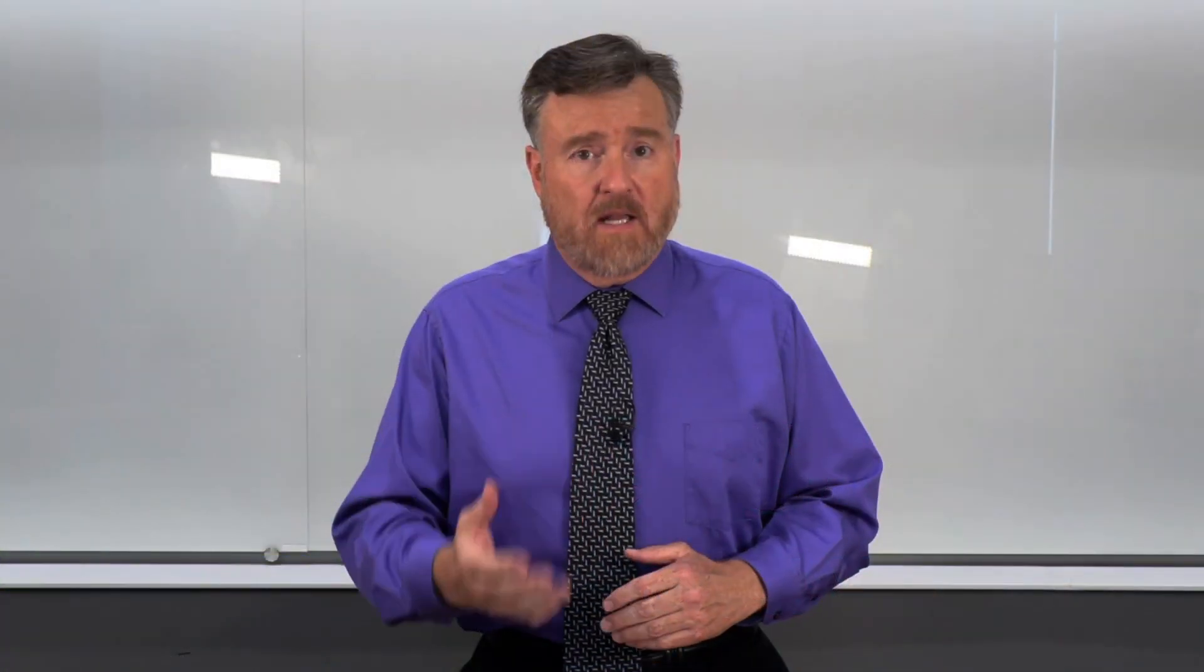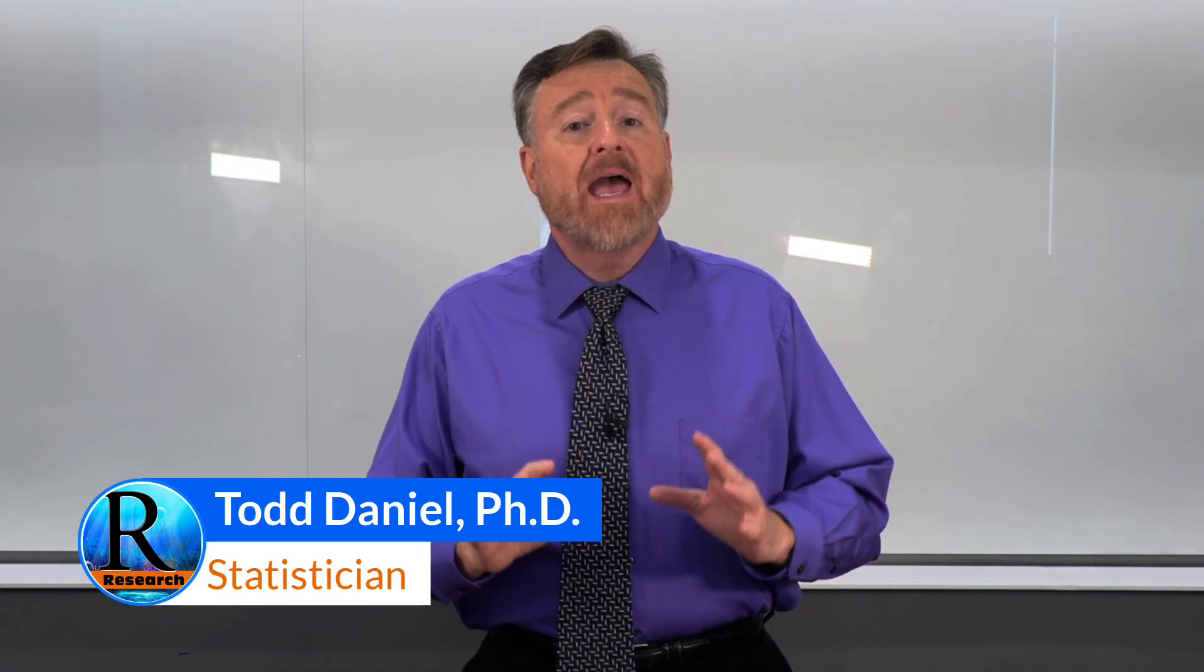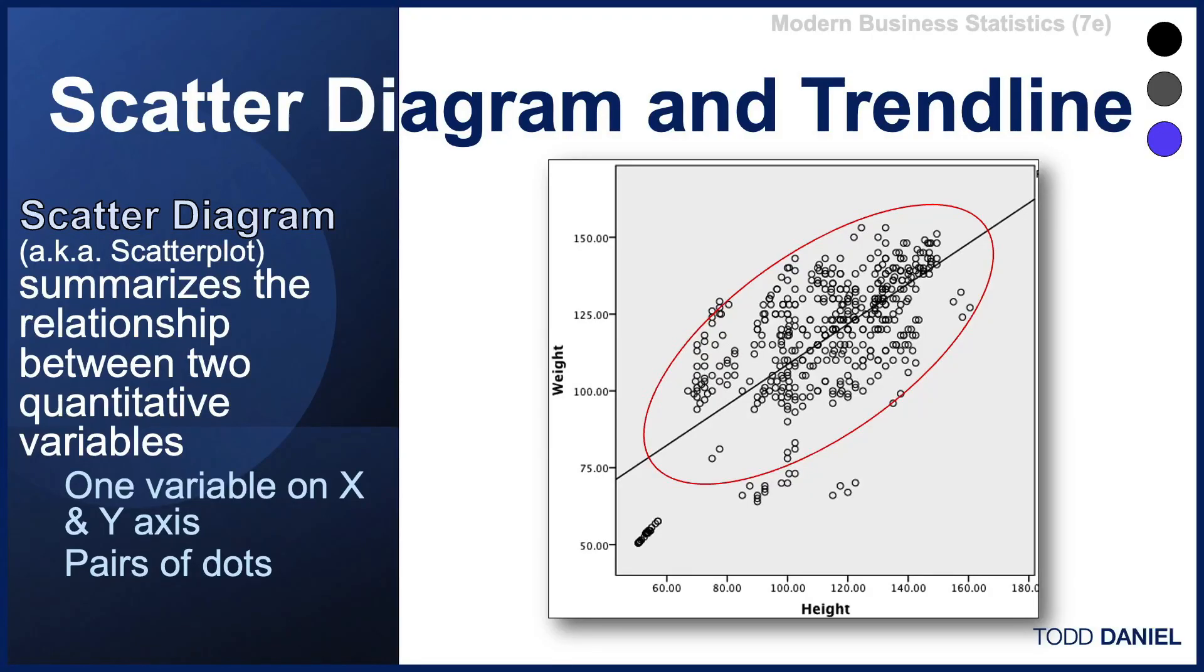When we want to explore the relationship between two scale variables, we have some amazing options. One of the best is the scatter plot, also called a scatter diagram. A scatter diagram or scatter plot summarizes the relationship between two quantitative or scale-level variables. To create a scatter plot, we plot one variable on the x-axis and the second variable on the y-axis.